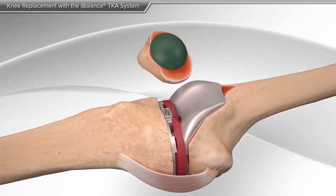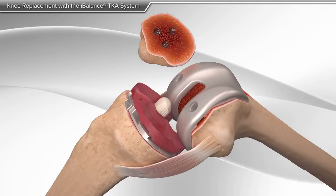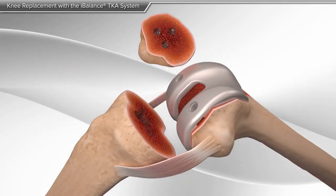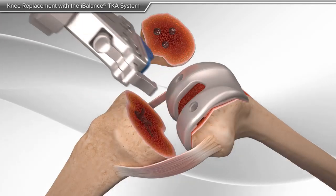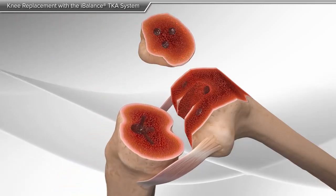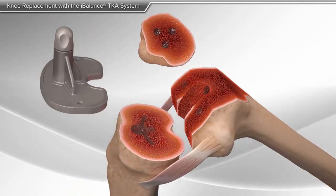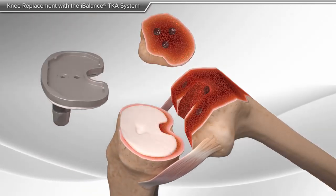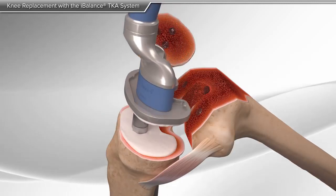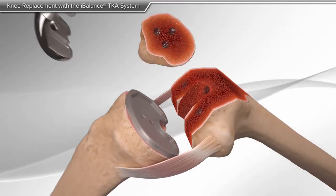The trial implants are then removed, and the surfaces are prepared for placement of the final implants. Your doctor applies bone cement on the backs of the tibia, femur, and patella implants for final fixation.